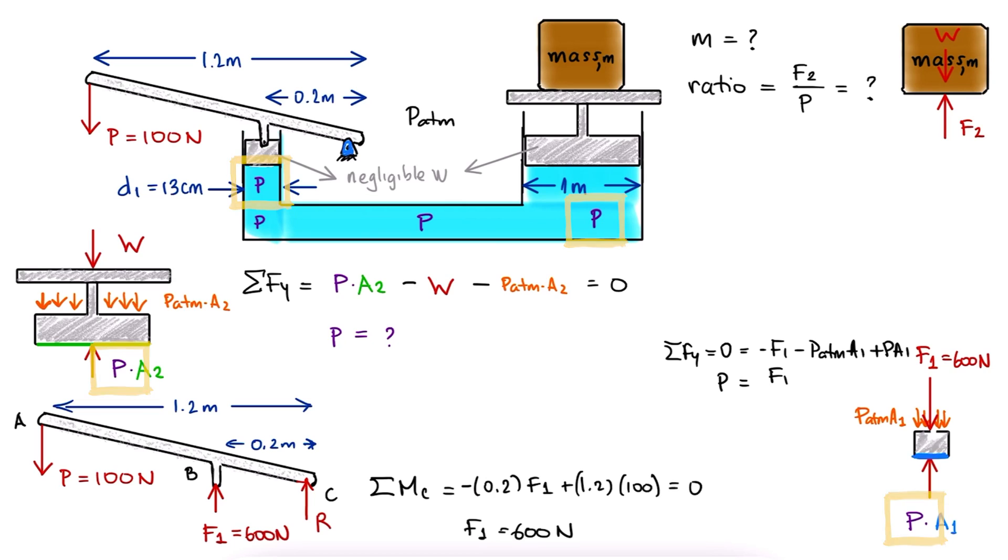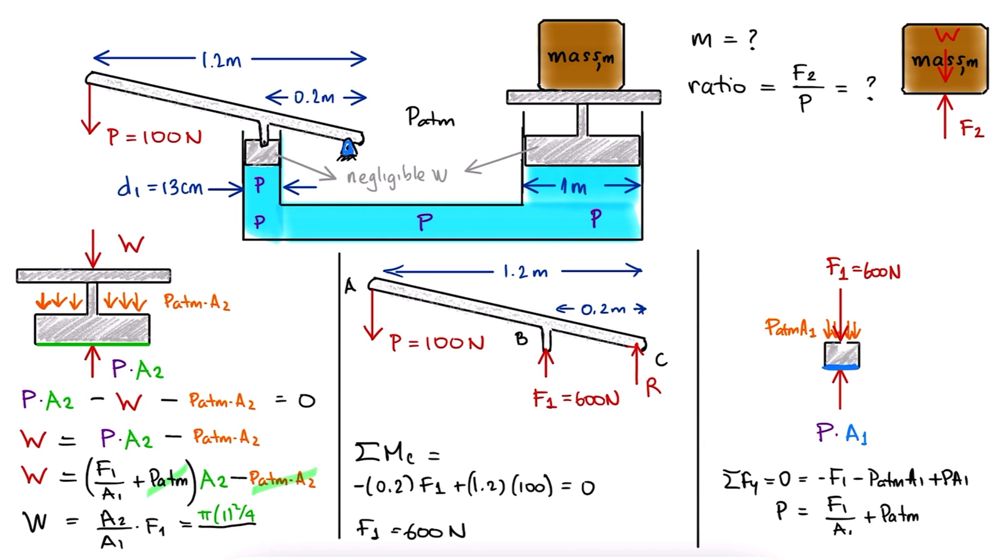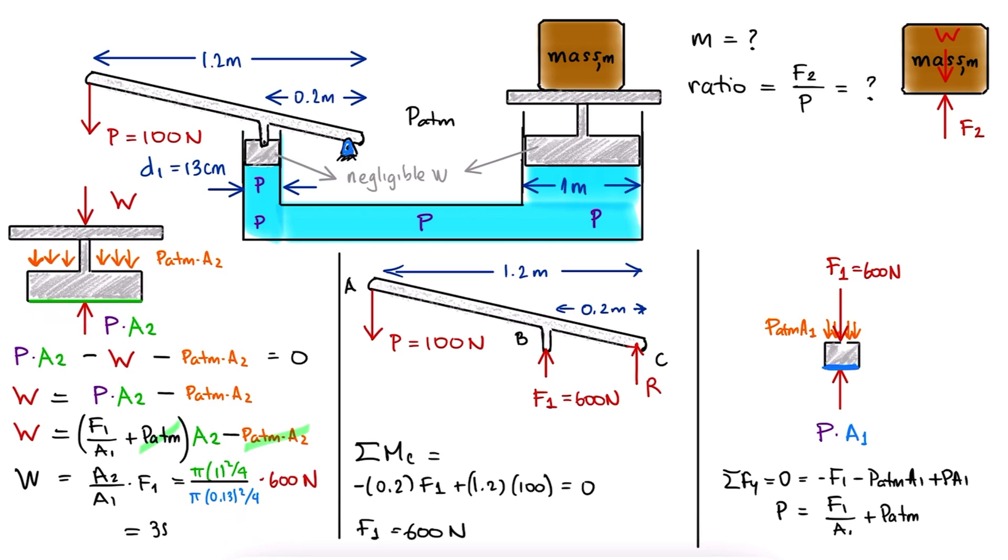Since the pressures at 1 and 2 are the same, we can solve for P from the smaller piston, and substitute it in our first equation to find that the weight is equal to A2 over A1 times the force. Therefore, the weight that can be lifted is about 35.5 kN, and the mass equal to 3619 kg.